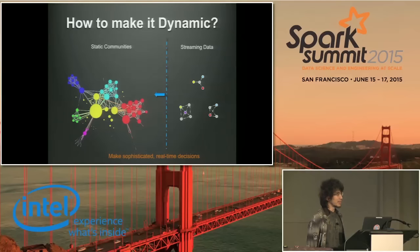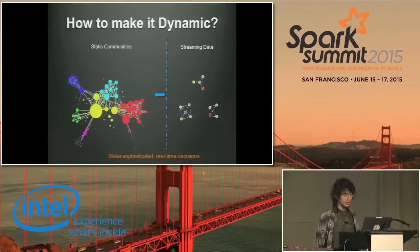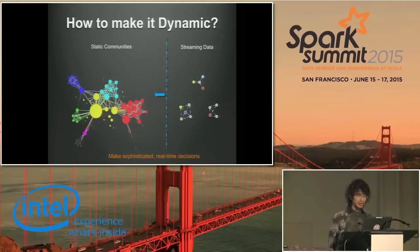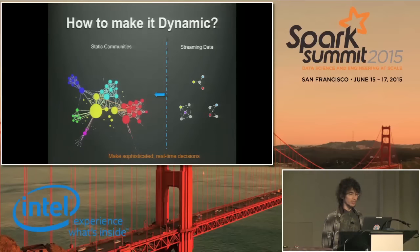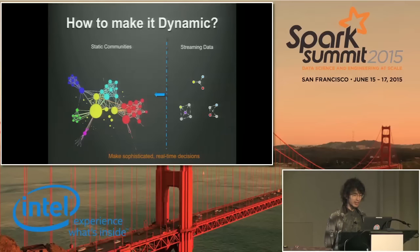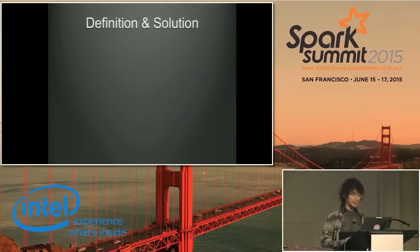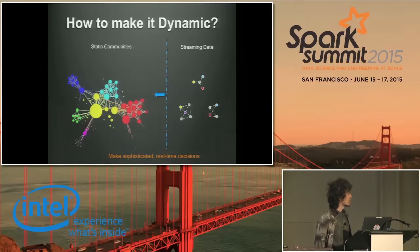Let's turn to the problem of how to make it dynamic. As you can see in the left part, we have the community results which are calculated once per day within two hours, with about 30 million sellers, finding about 40,000 communities. In the right part, we have hundreds of thousands of new transactions that keep coming every minute, and they can also be formed into a small graph. How can we integrate them with the big existing communities and make the community results dynamic, so it can help us make accurate and real-time decisions?